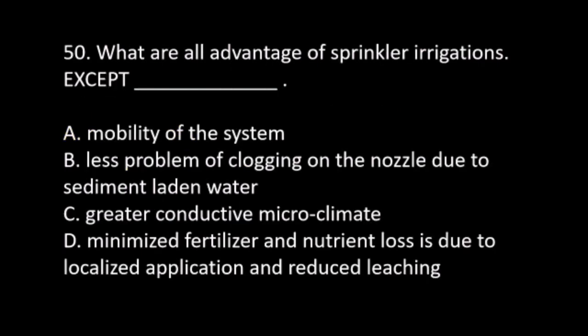Number 50. What are the advantages of sprinkler irrigation, except: B. Less problem of clogging on the nozzle due to sediment-laden water. C. Greater conducive microclimate. D. Minimized fertilizer and nutrient losses due to localized application and reduced leaching. The answer is D. Minimized fertilizer and nutrient losses due to localized application and reduced leaching.